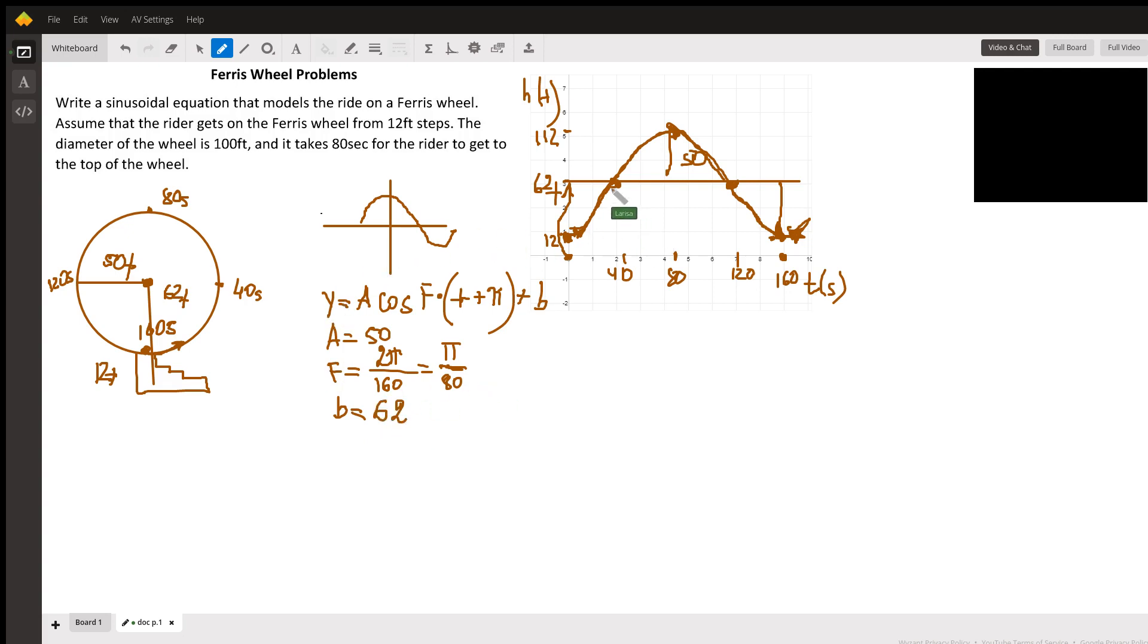Is there any horizontal shift? No, there is no horizontal shift. It's just flipped across the Y axis. We can write the equation: Y equals negative 50 cosine π/80 times T, plus 62. No horizontal shift, but there is a vertical shift by 62 units.